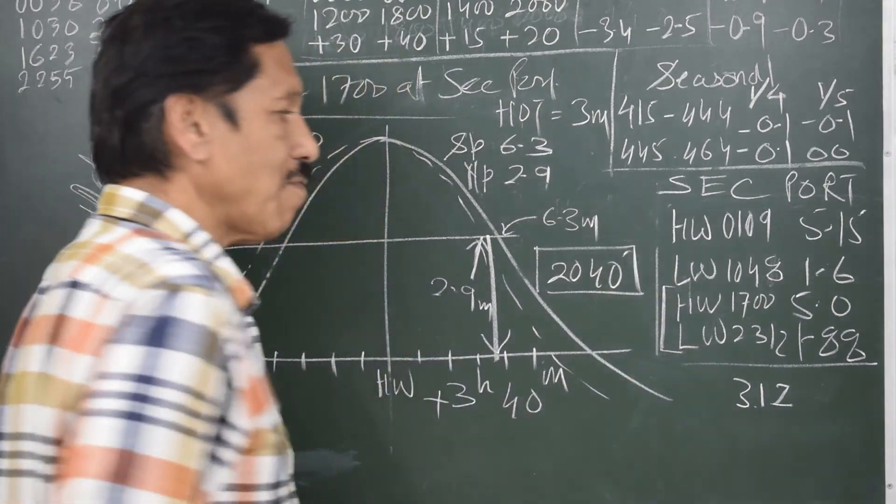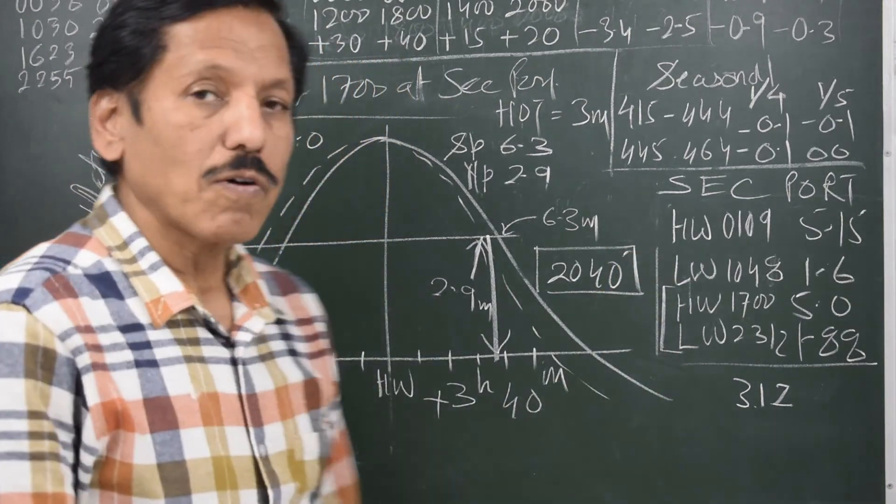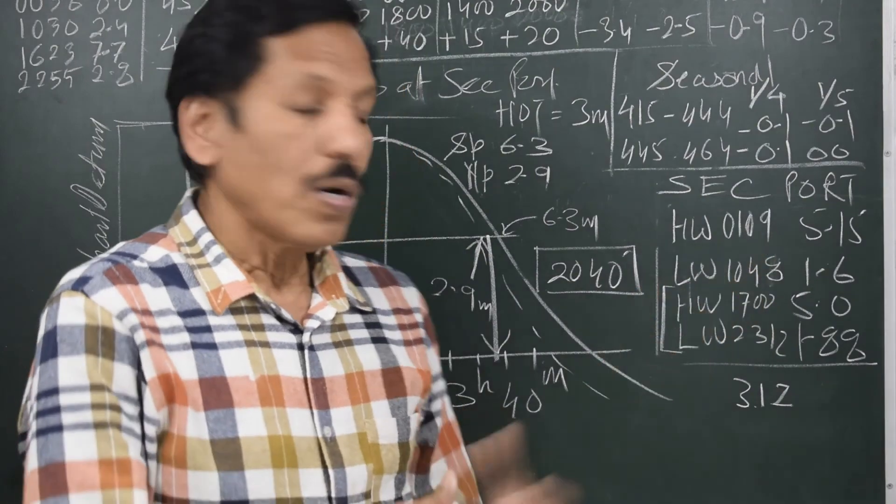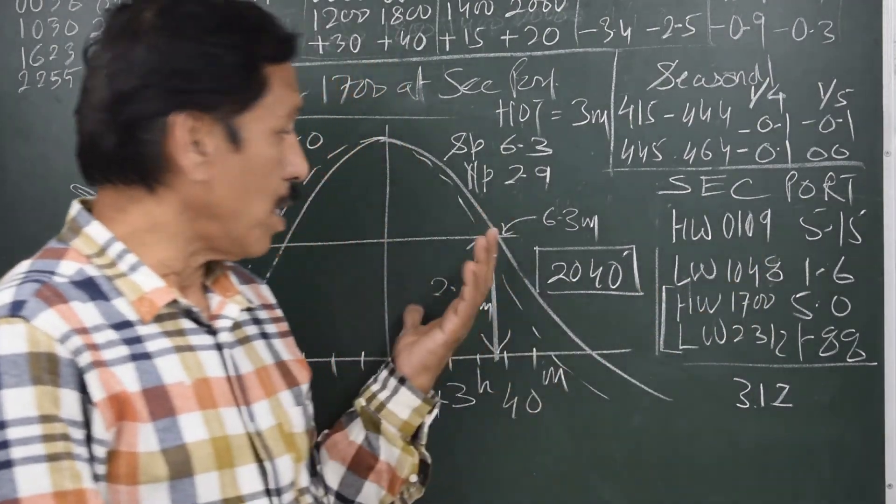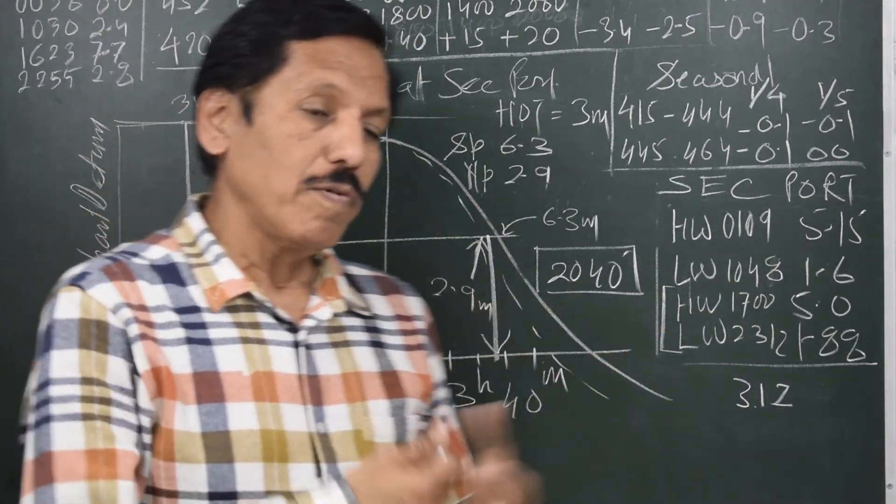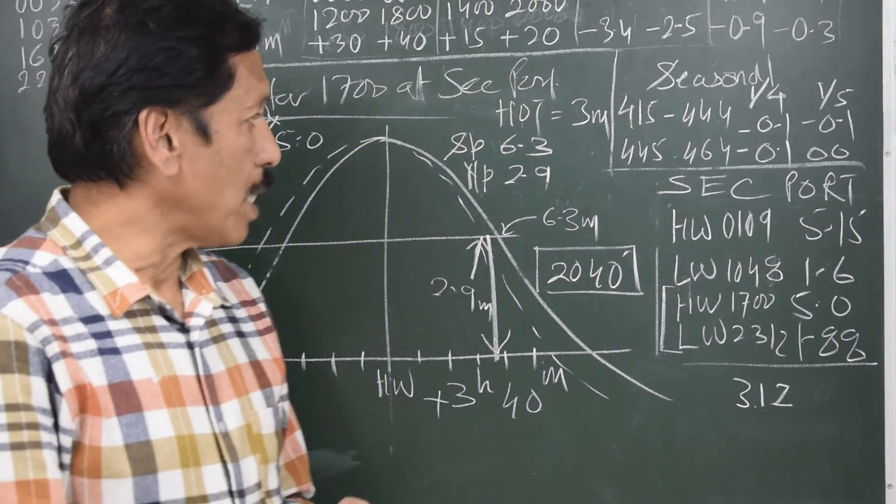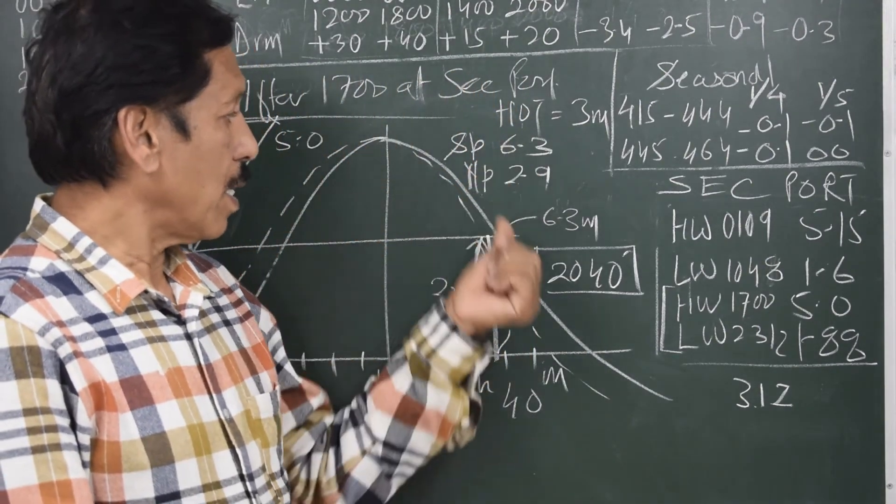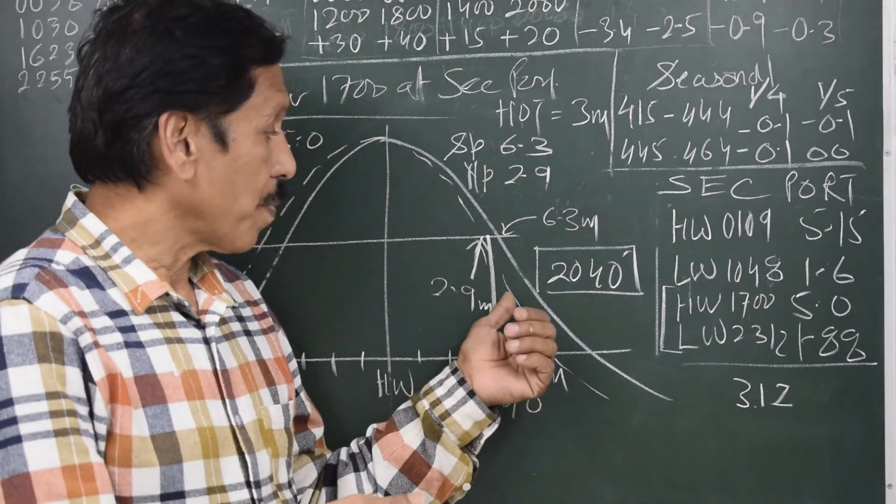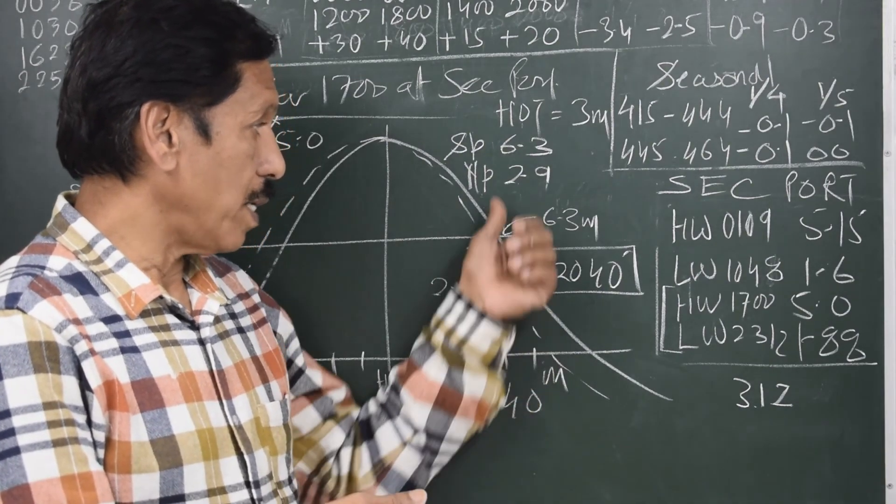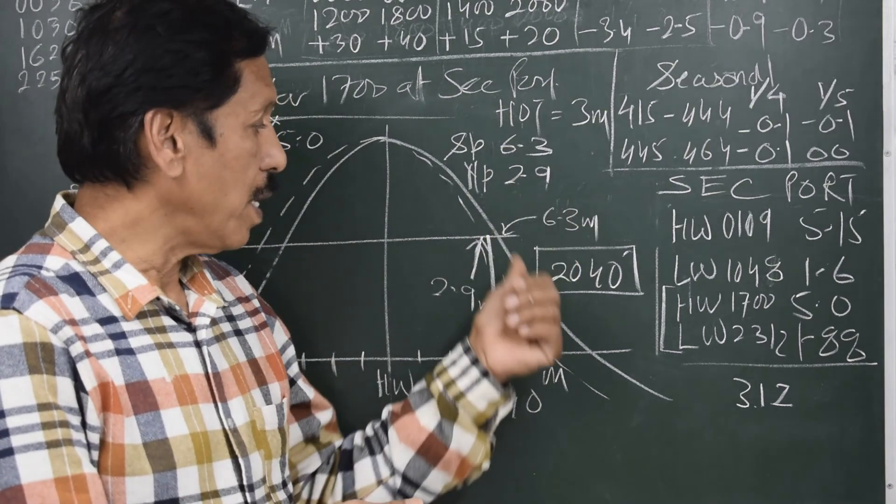When after 1700 the height of tide is going to be 3 meters. So this is how we can use the same curve which was for standard port - we can use it for secondary port. But only precaution that must be taken is the representation of the neap line is for neap, neap should be for secondary port, and representation of sound line is for springs, springs for the secondary port.